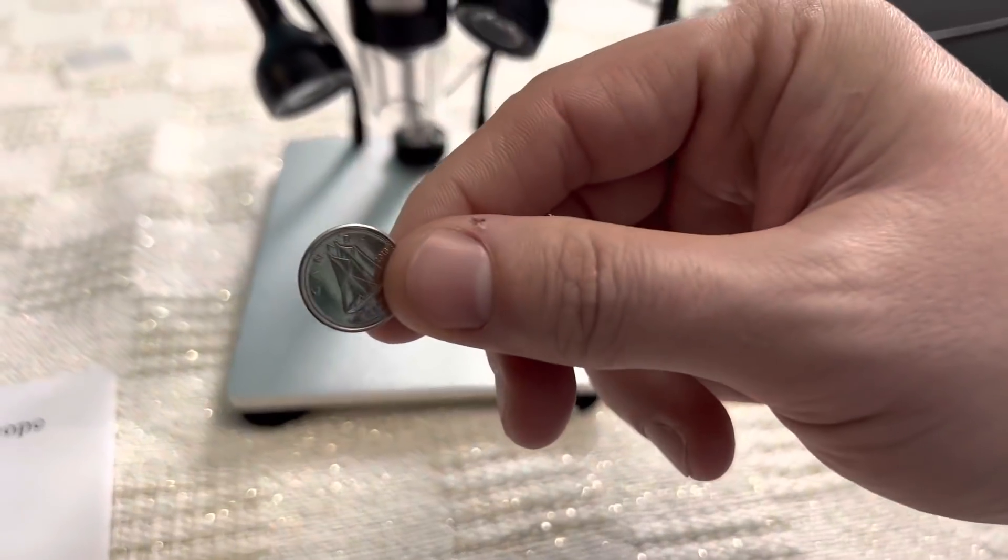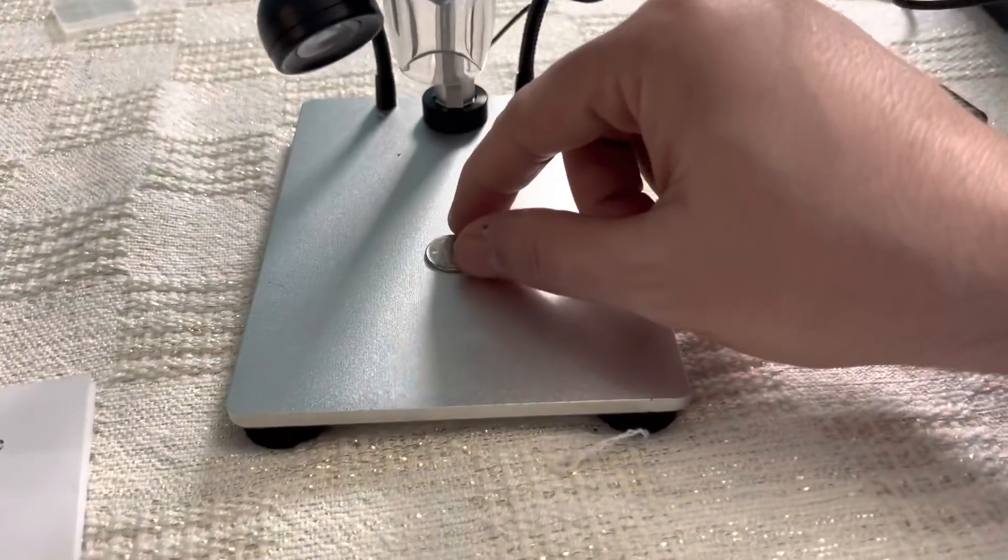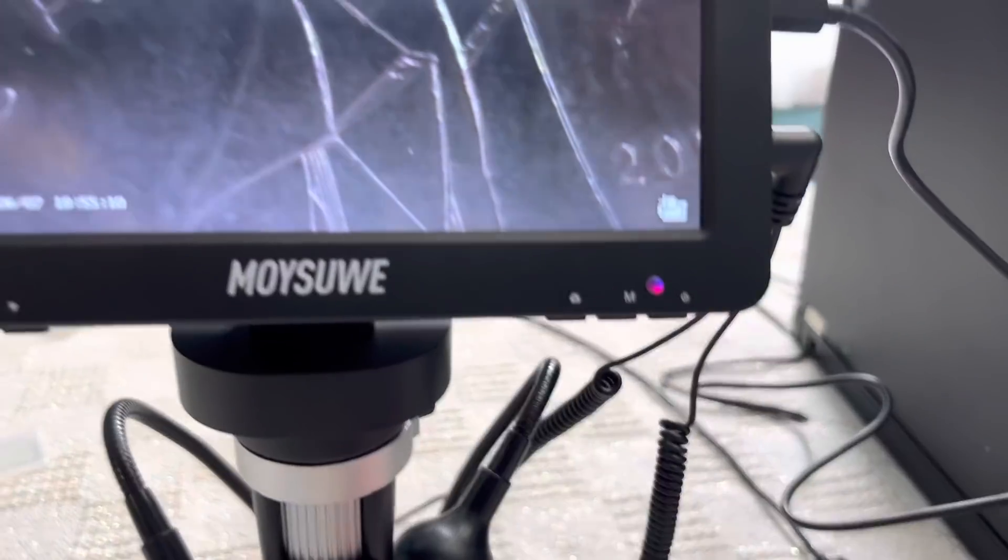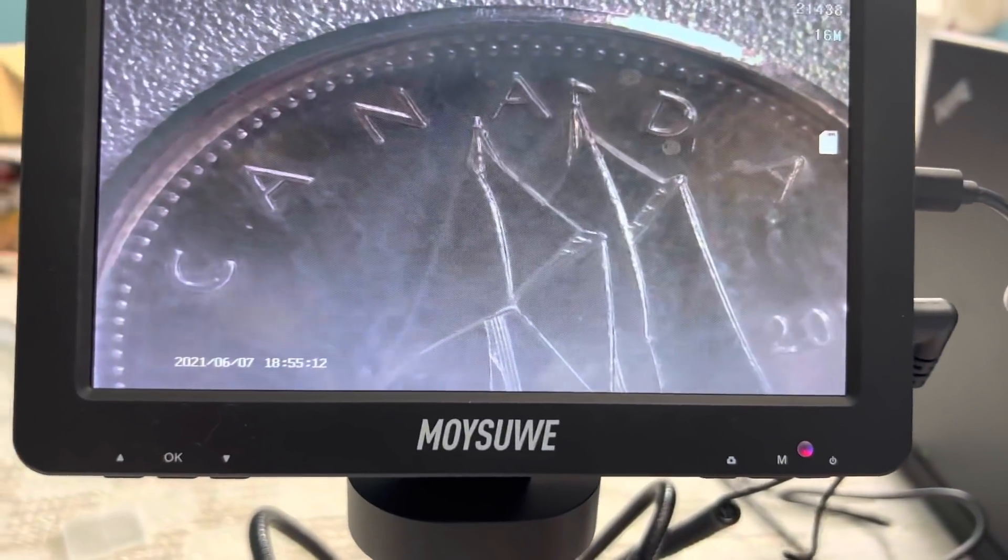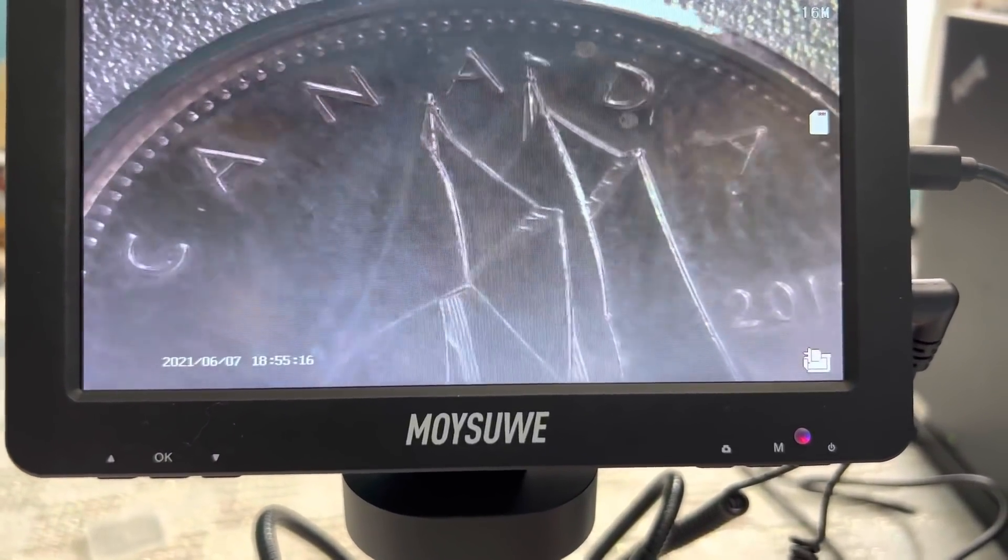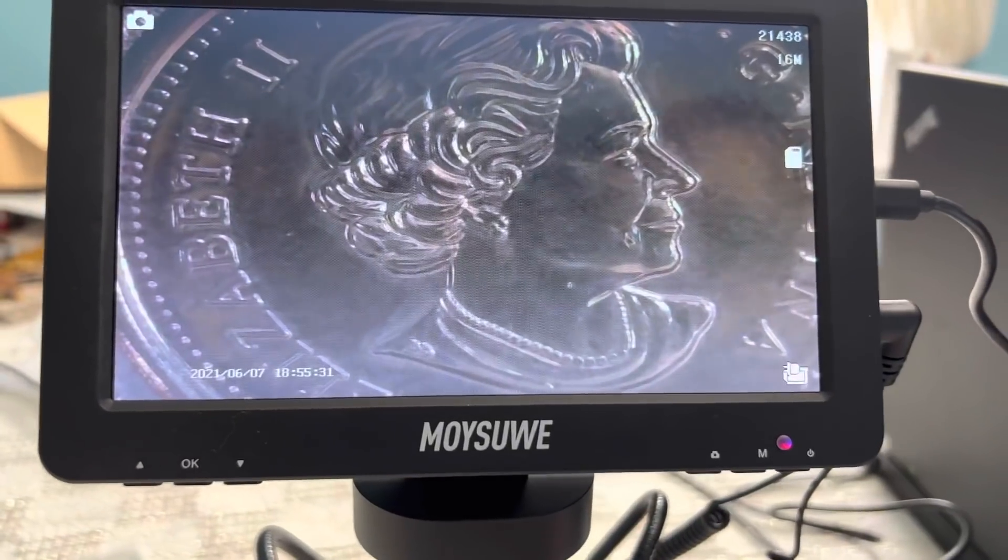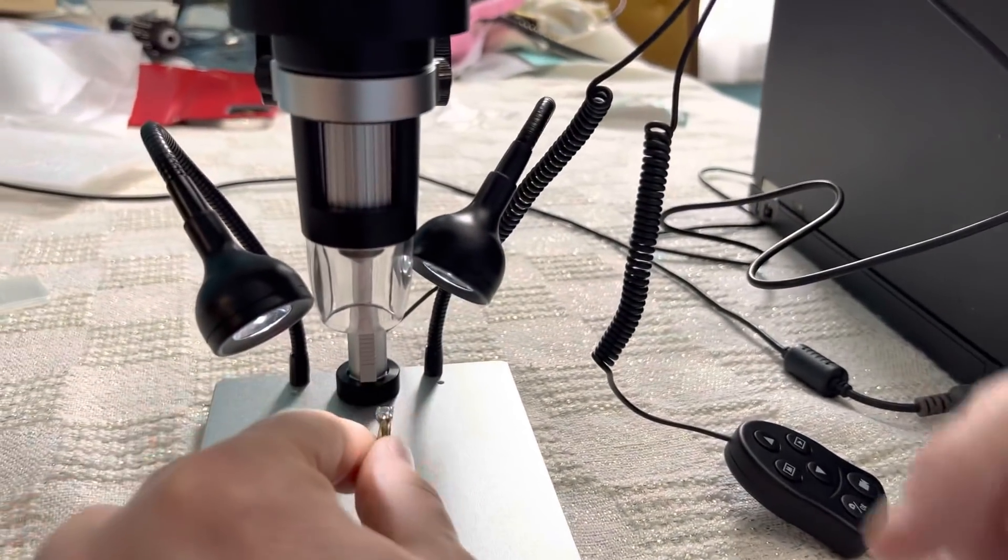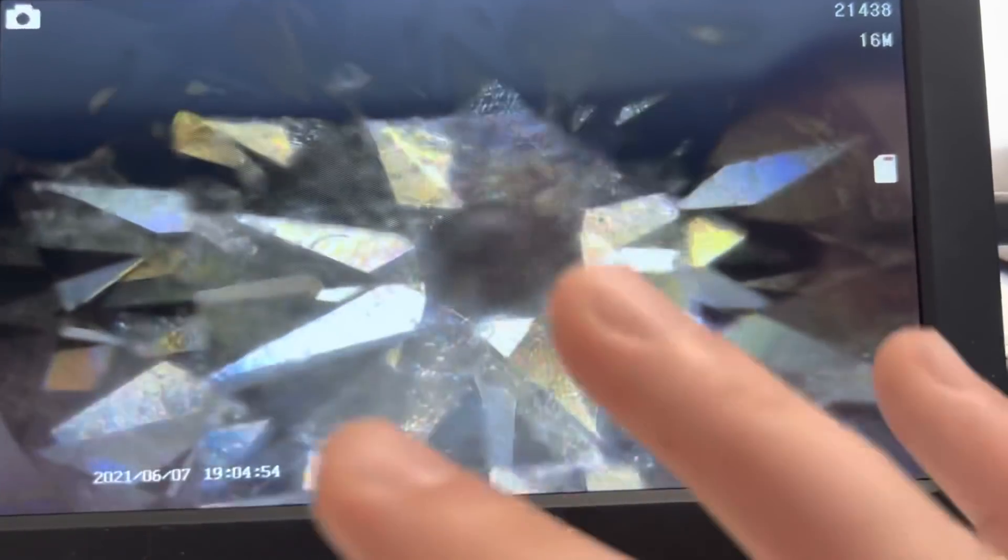I'll show you the Canadian dime. Alright, now you see the Canadian dime with the blue nose boat. Alright I'll show my wife's ring, make sure I got a real one. So you can see all the different facets of the cut of the diamond.